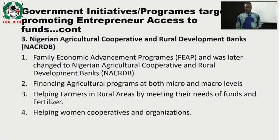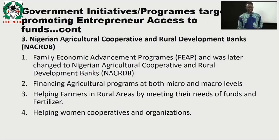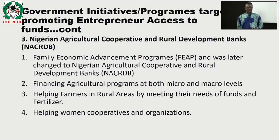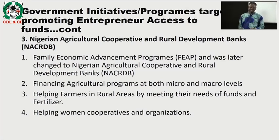Three: Nigeria Agricultural Cooperative and Rural Development Bank (NACRDB) — a family economic advancement program, later changed to Nigeria Agricultural Development and Rural Development Bank — with functions including financing agricultural programs at both micro and macro levels, helping farmers in rural areas by meeting their needs for funds and fertilizer.